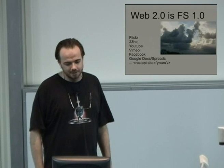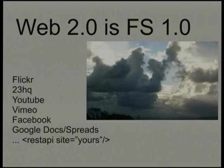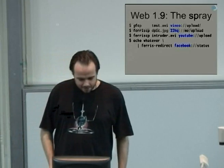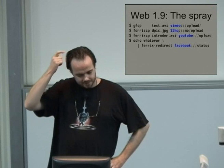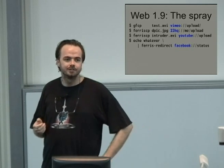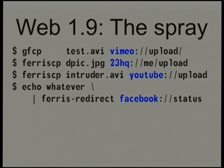Web 2.0 becoming file system 1.0: Flickr, Vimeo, YouTube, Facebook, Google Spreadsheets, and Google Docs just become other virtual file systems. For Google Spreadsheets, you make the URL obvious — Google Spreadsheets slash whatever the spreadsheet name is — and if you echo 5 and 23 into two different cells and a formula into a third cell, when you fcat that formula cell back, Google gets you the result of that calculation. Things like Vimeo and 23HQ: if you copy a JPEG file — or even a Canon CR2 raw file — you can directly CP it to Flickr using LibFerris. You can drop videos onto YouTube, and for Twitter and Facebook, you can echo stuff directly into your status from the file system.